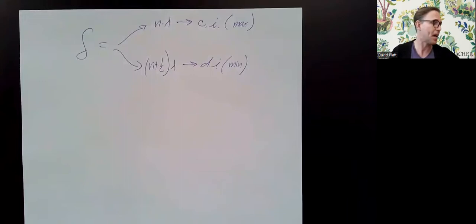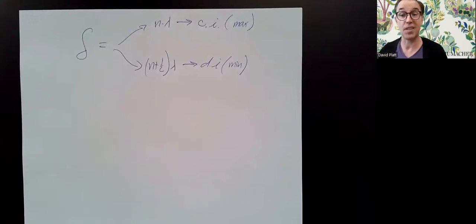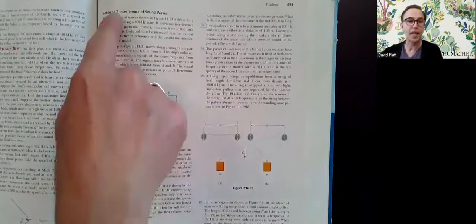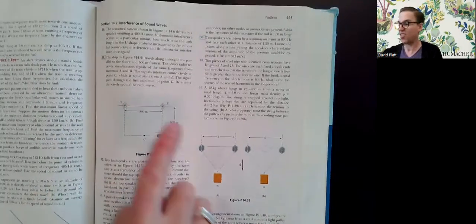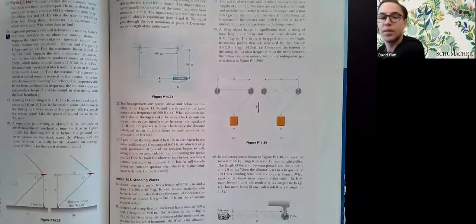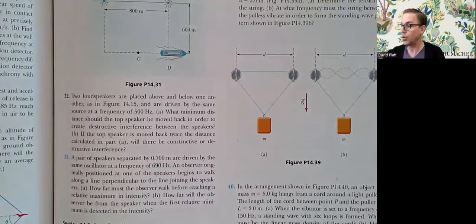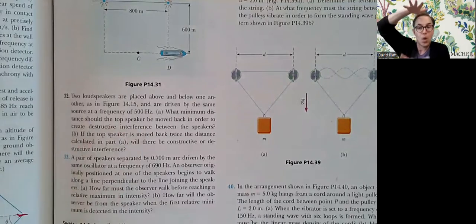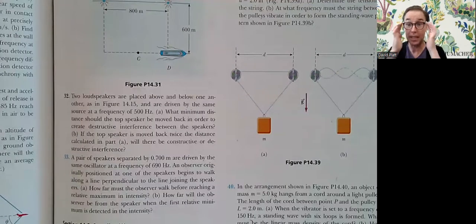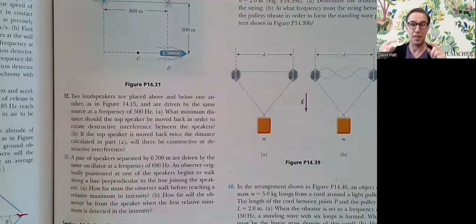Let's do one or two examples and see how this plays out. I'm going to look at number 32 in my book. Two loudspeakers are placed above and below one another, and they're driven by the same source at a frequency of 500 hertz — meaning they have the same frequency. Being driven by the same source means they start crest together, drop together — they're coherent.